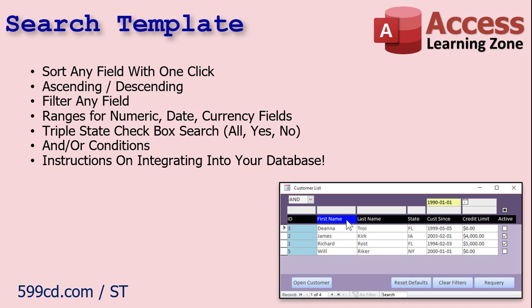It's a simple Access continuous form. You can sort on any field with one click, and another click will sort descending. You can filter by any field — ID, first name, last name, and so on. There are ranges for searching numeric values, dates, and currency fields. So you can say, show me all the records between January 1st and February 1st, 2004. There's also a triple-state checkbox, so for any checkbox fields you can search for all of them, yes or no. The searching can be either an AND or an OR condition — show me all the people from Florida and have a credit limit of at least $2,000, or you can do it as OR.